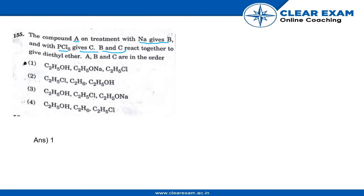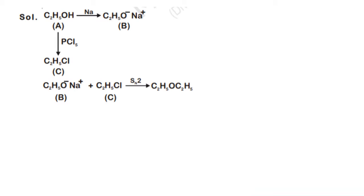B and C react together to give diethyl ether, so B and C are in the order. Let's start with solving. So we are given that compound A reacts with Na and gives us B, and A reacts with PCl5 to give C.